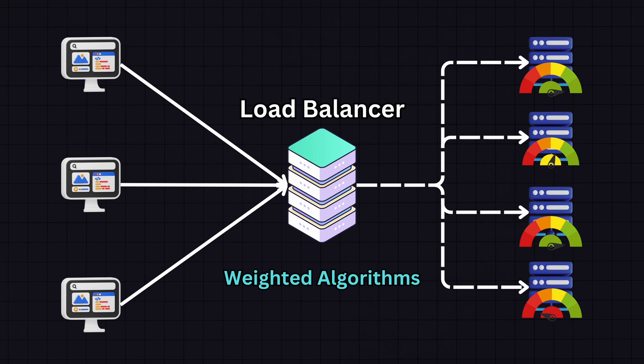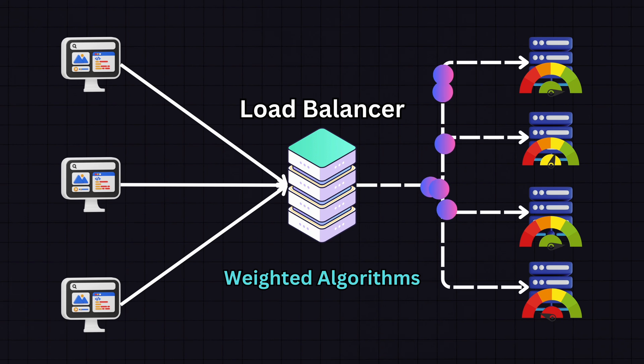The variants of these methods can also be weighted, which brings us to the weighted algorithms. For example, in weighted round robin or weighted least connections, servers are assigned weights typically based on their capacity or performance metrics, and the more capable servers handle the most requests. This is effective when servers in the pool have different capabilities, like different CPUs or different RAM.